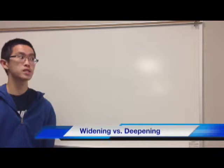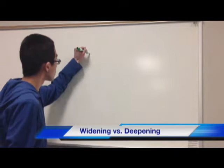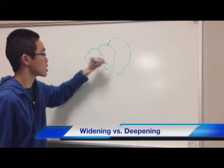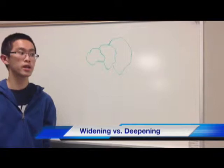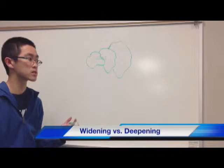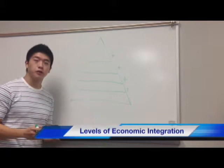There are two methods of integration. Widening is the development of integration by expanding membership — so if these are your two original territories, widening would involve adding an additional country. Deepening is the other method of integration, and it involves increasing integration by developing stronger connections between existing members, creating more and more connections between them.